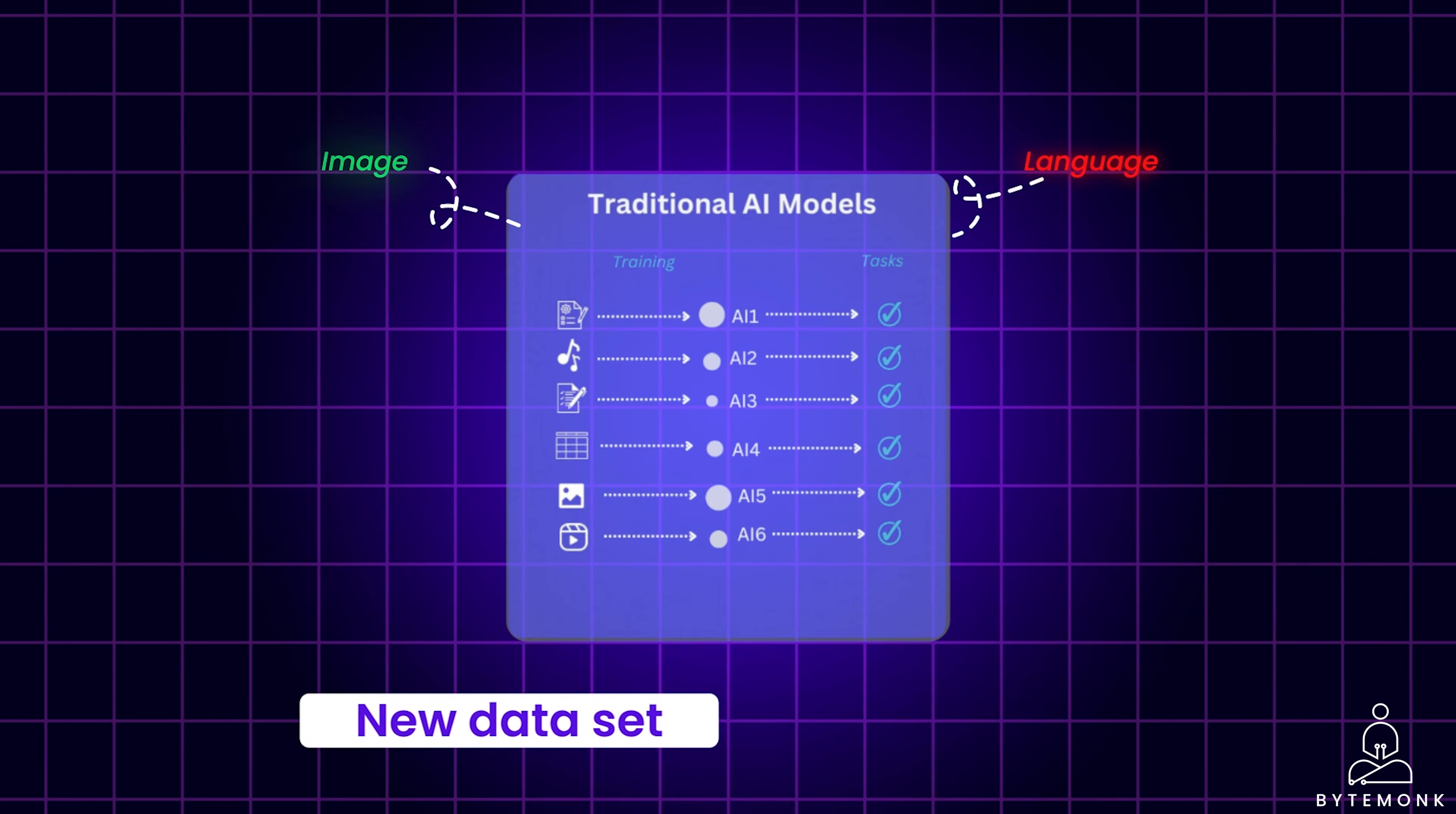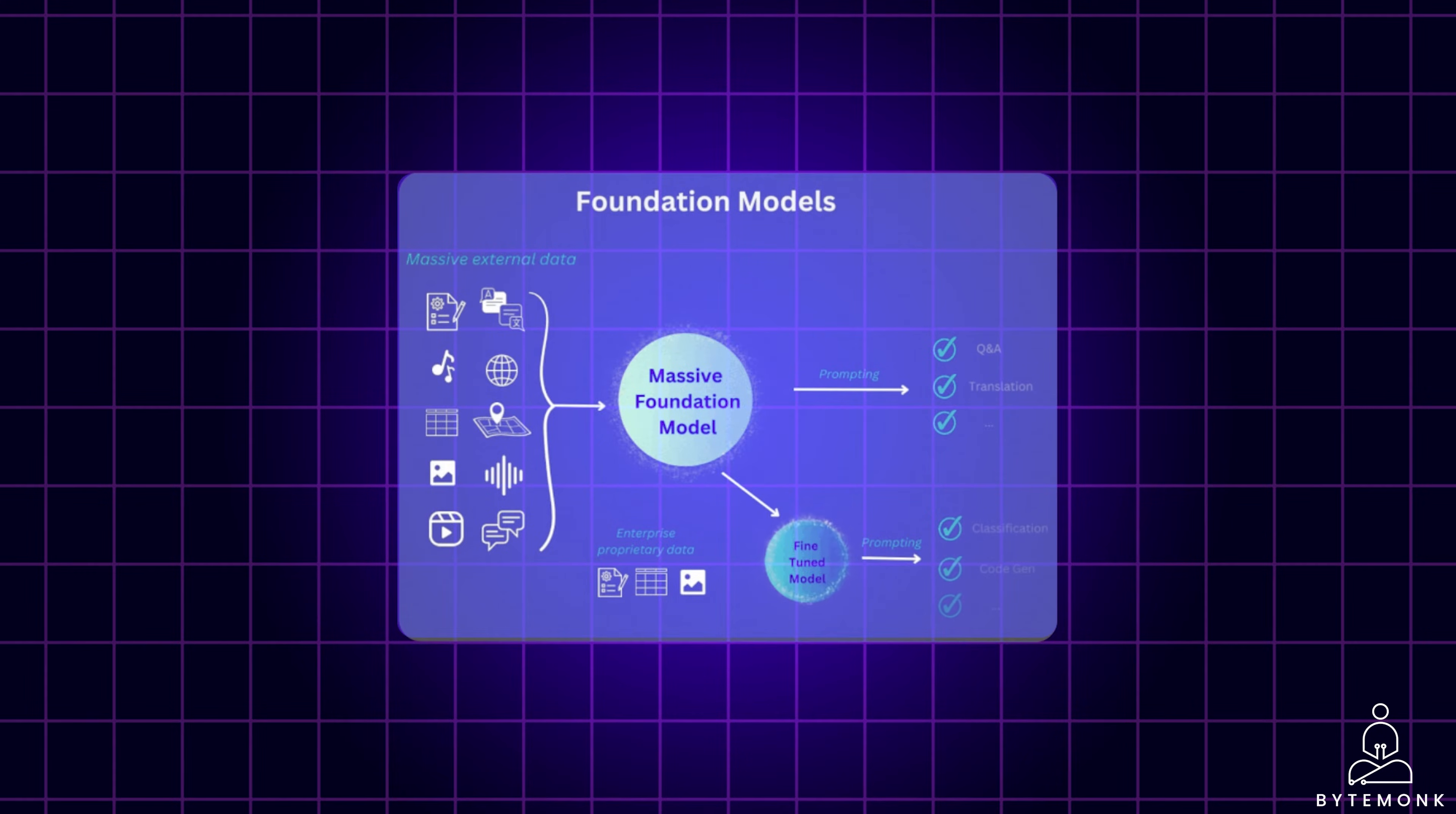The data curation process requires significant human labor, often involving experts to correctly label data and ensure quality. Foundation models have changed the landscape in several key ways.